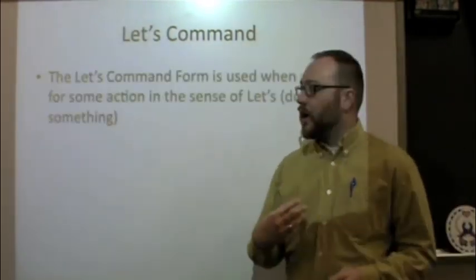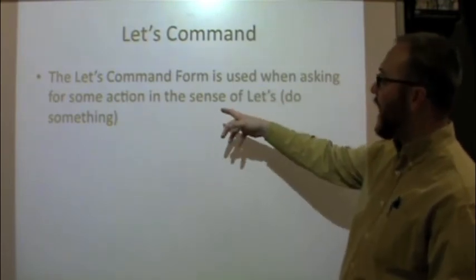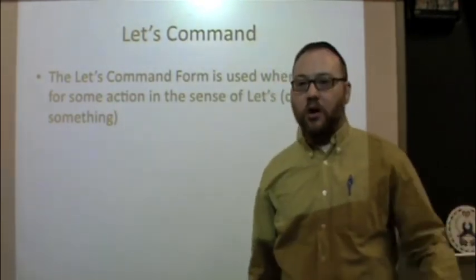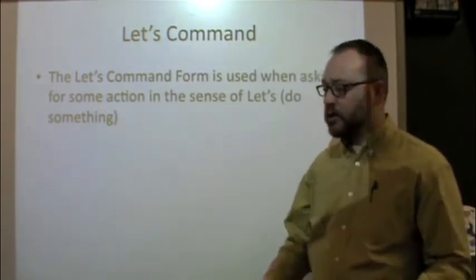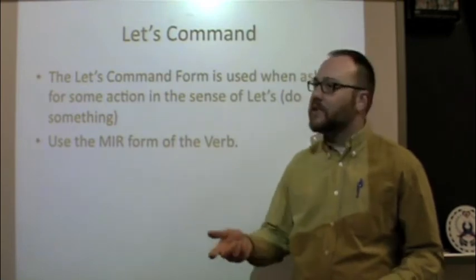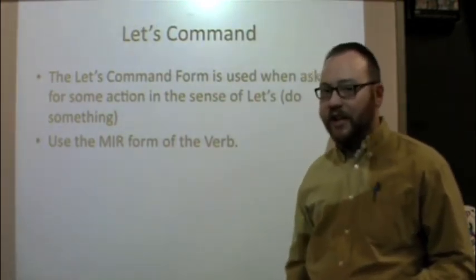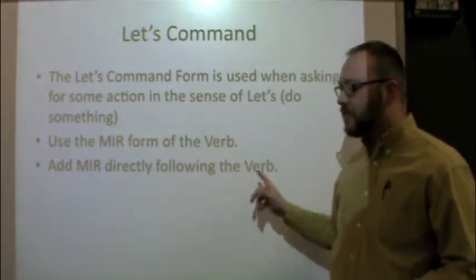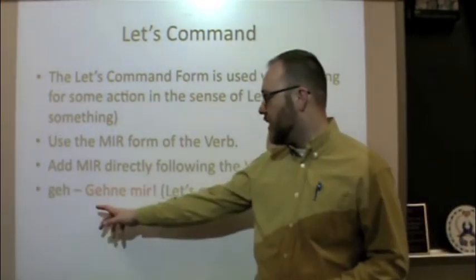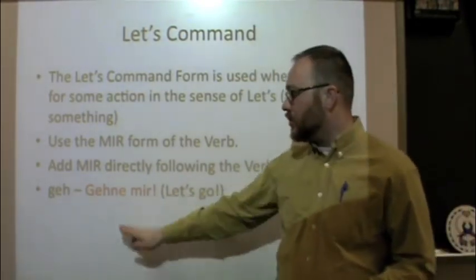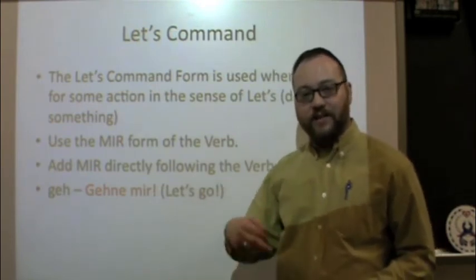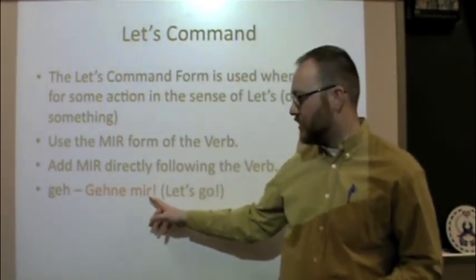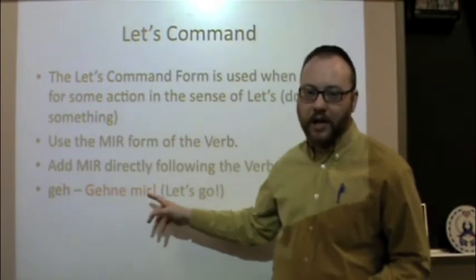Now the other situation is what if you are included? The 'let's' command form is used when asking for some action in the sense of 'let's' — like 'let's do something,' 'let's go home,' 'let's eat some more cake.' You're included. When we do that we use the 'mir' form of the verb, which almost always happens to be the same as the infinitive — with the E ending. But this time we're also going to add 'mir' directly following the verb. If we take 'gay' again and say 'let's go,' we use the 'mir' form, which in this case is 'gaina' — an irregular verb. Add 'mir' after it: 'gainamir' — let's go.